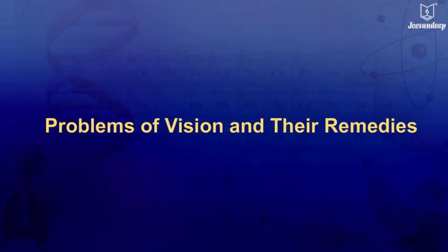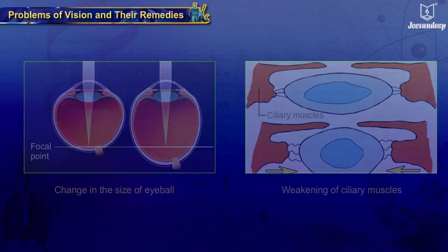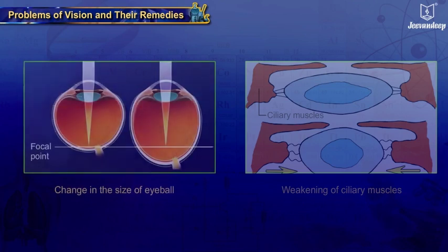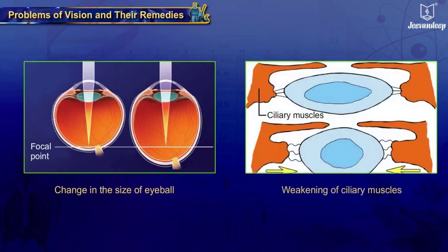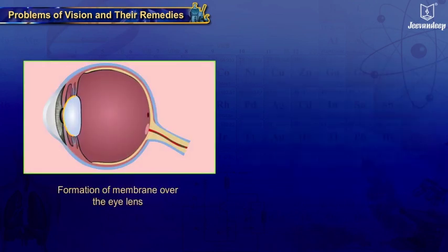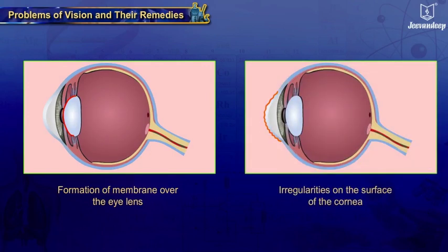Problems of Vision and Their Remedies. Some people cannot see objects clearly due to loss of power of accommodation of the eyes. Vision problems can occur due to various reasons like change in the size of the eyeball, weakening of ciliary muscles, formation of an opaque membrane over the eye lens, irregularities on the surface of the cornea, etc. Because of these refractive defects of the eye, the vision becomes blurred.